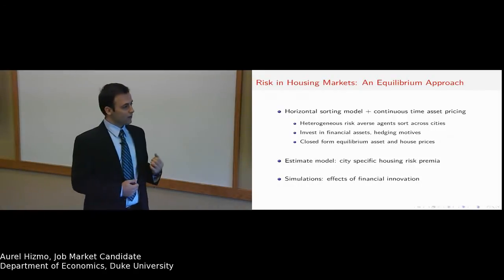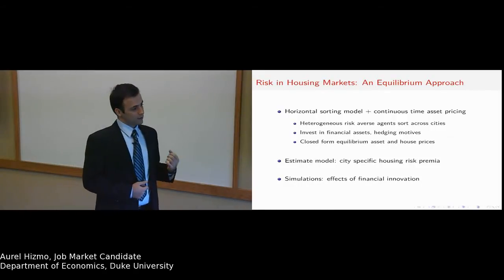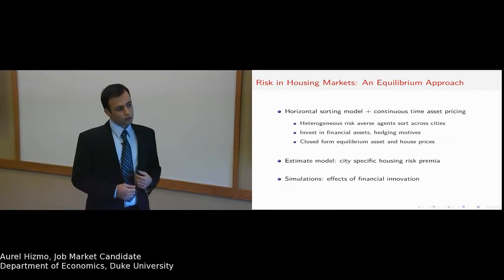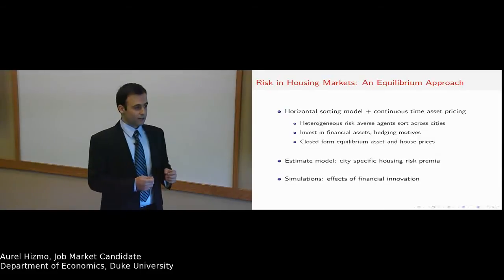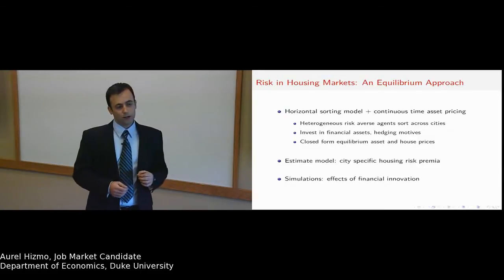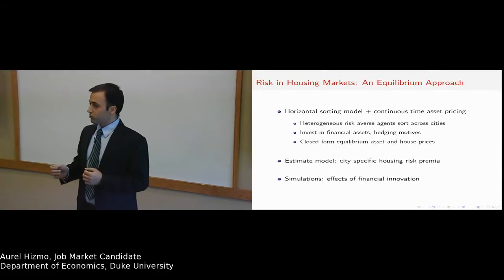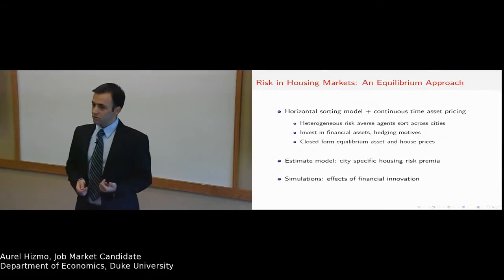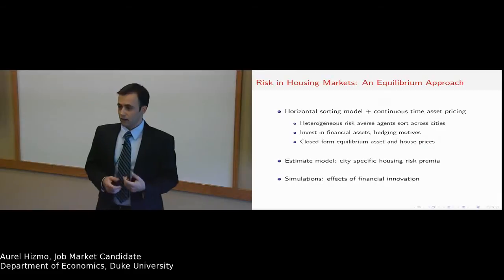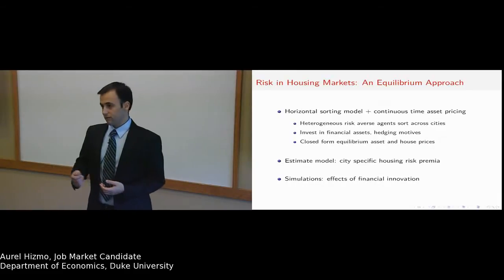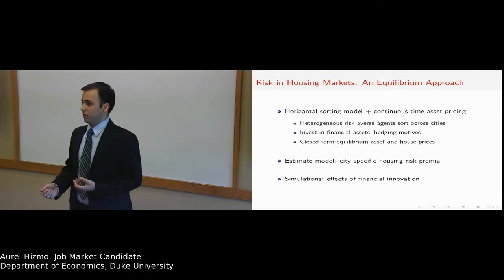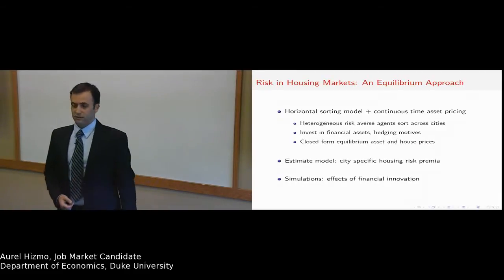What's nice about these explicit solutions is that they show a clean characterization of how non-insurable risk affects individual choice, and through individual choice, how it affects housing prices and asset prices.